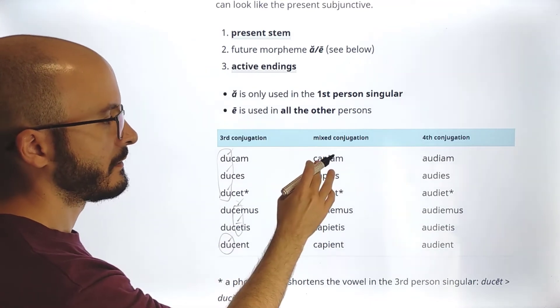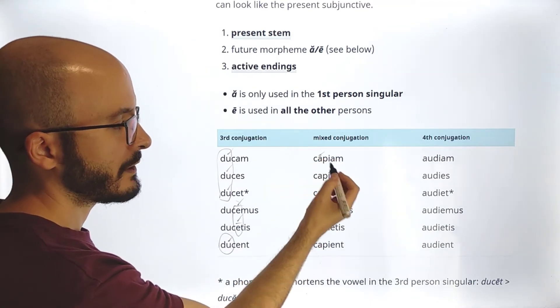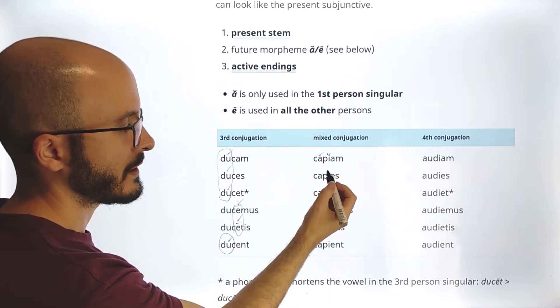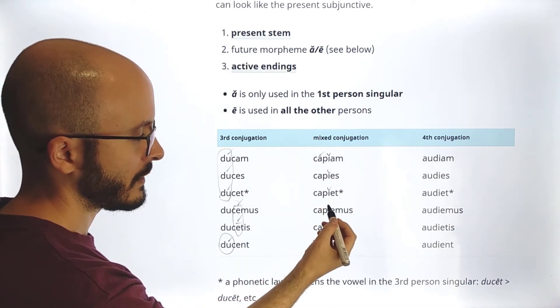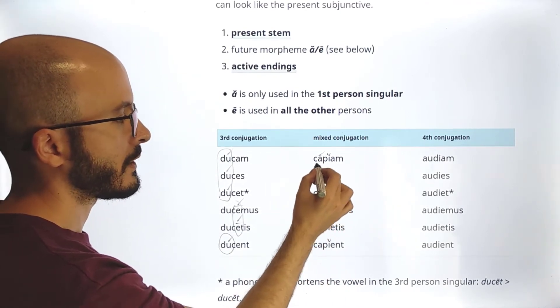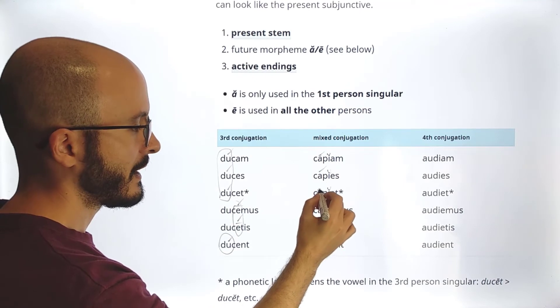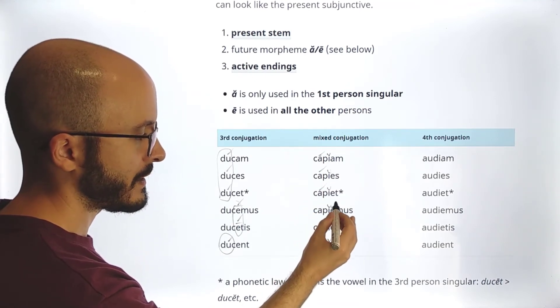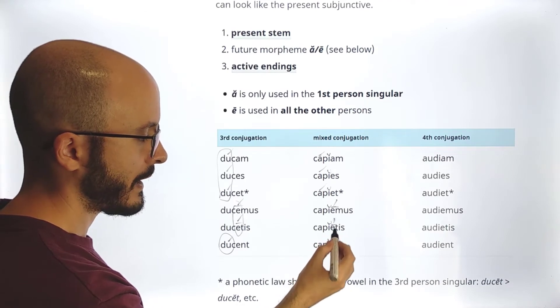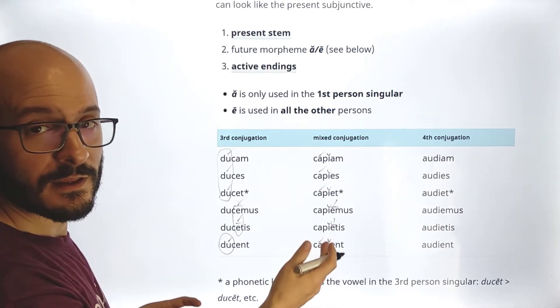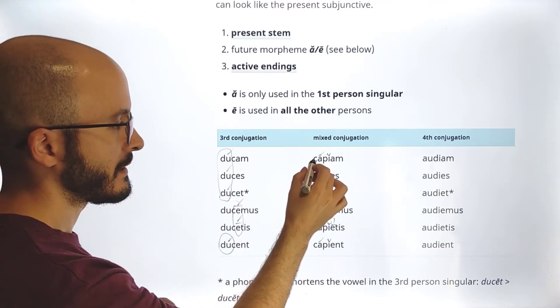Now here we have capiam. Remember that this E is short because it's followed immediately by another vowel, okay? So this E is always going to be short. Sometimes it will matter, sometimes it won't. So capiam, capies, capiet. Now here this E is long. So capiemus, capietis, and here capient. So we see that the pattern of the stress is the same.